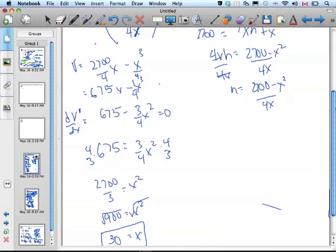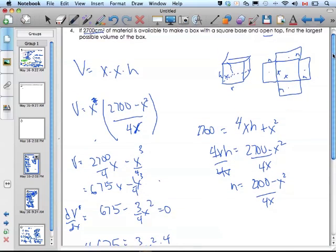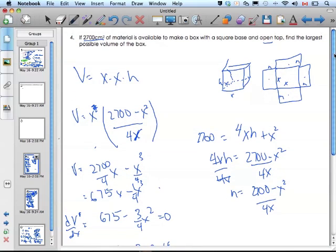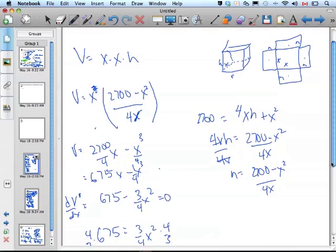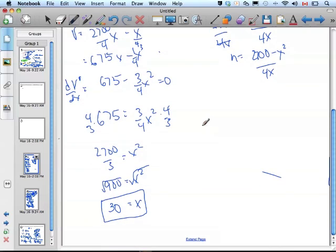If we look at our question, it's talking about specifically find the largest possible volume. Well, let's go and make sure we have a maximum. So we take the derivative over x, make a sign chart. This is volume. I know this is 30. I plug a value into my derivative that's less than 30.